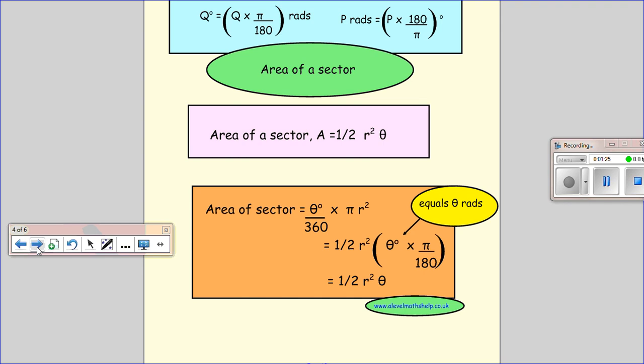The area of the sector, given by A, is a half r squared times theta, and theta is in radians. So that's the thing you need to learn and be able to use.